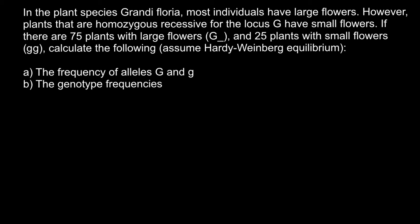If there are 75 plants with large flowers (genotype G_) and 25 plants with small flowers — that is, small g small g, or homozygous recessive — calculate the following. Assume Hardy-Weinberg equilibrium and find: (a) the frequency of the alleles G capital (dominant) and g small (recessive).